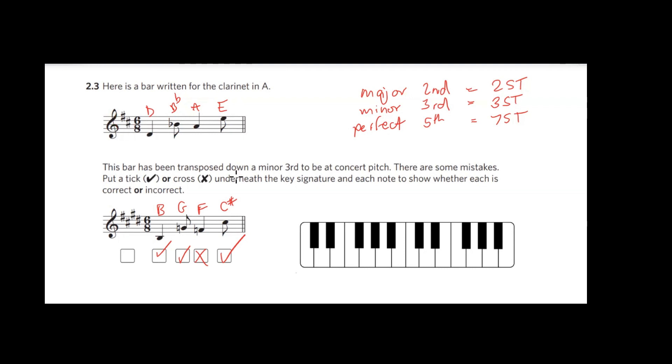Two sharps is D major, so that's a D that I would write there. The major key that has two sharps is D major, and the major key that has four sharps is E major.